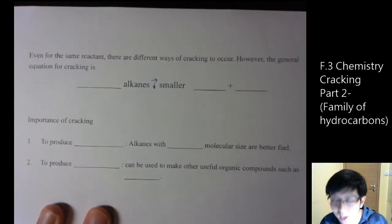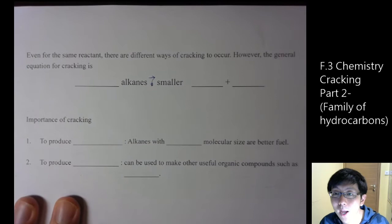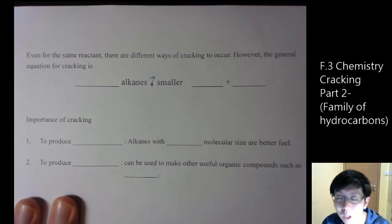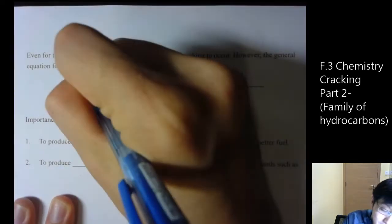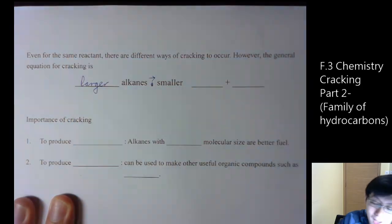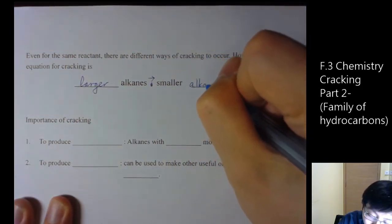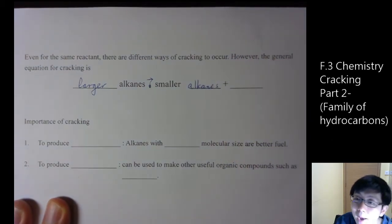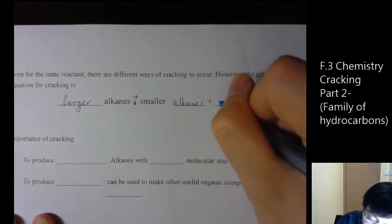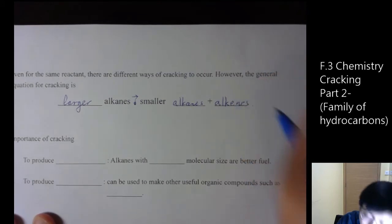So go to page 3 here. Even for the same cracking reaction, the general equation will be larger alkanes produce smaller alkanes plus alkenes. And there must be the production of alkenes.